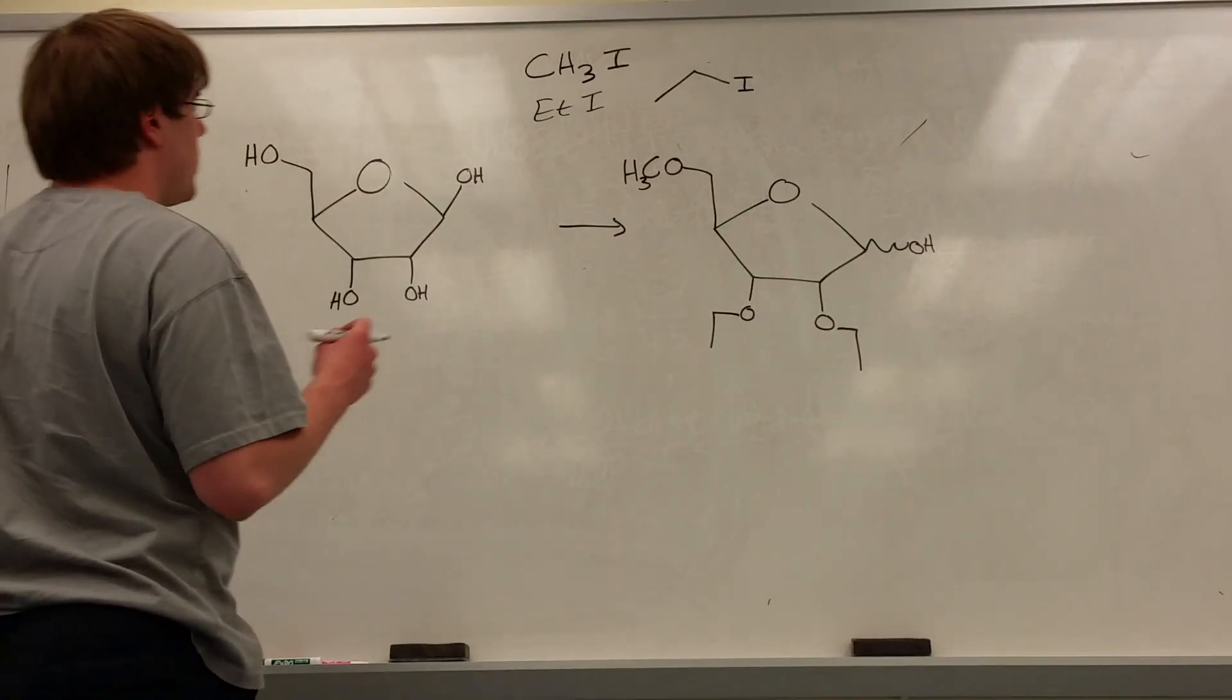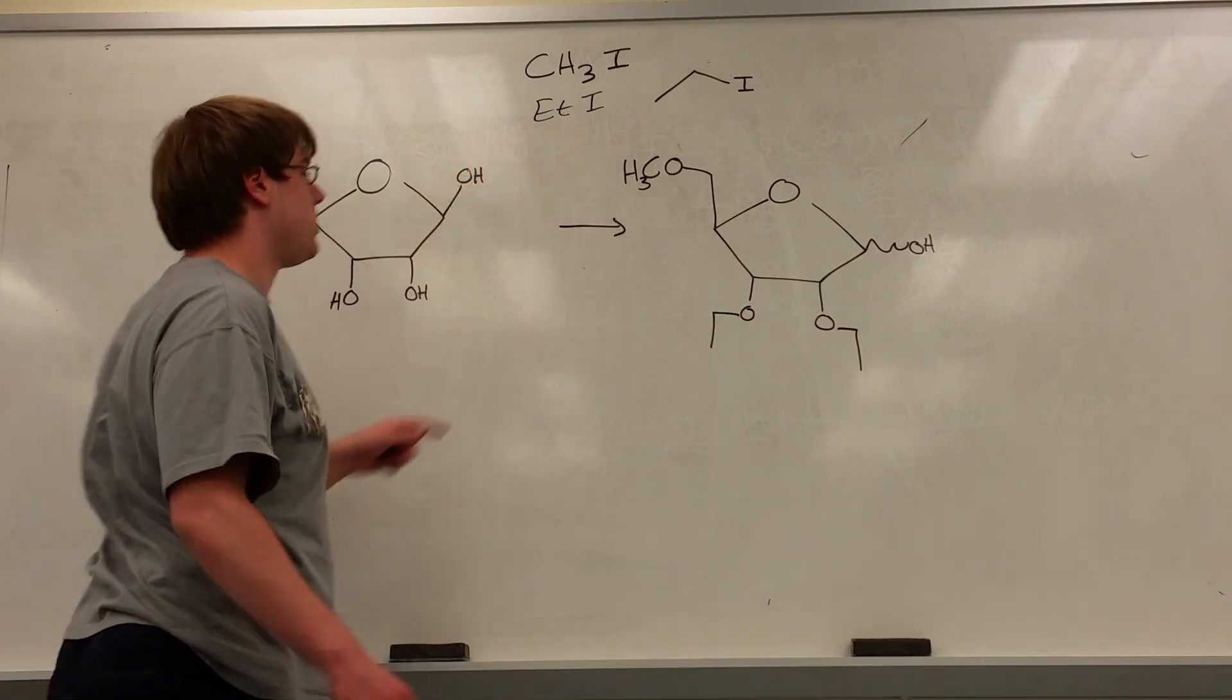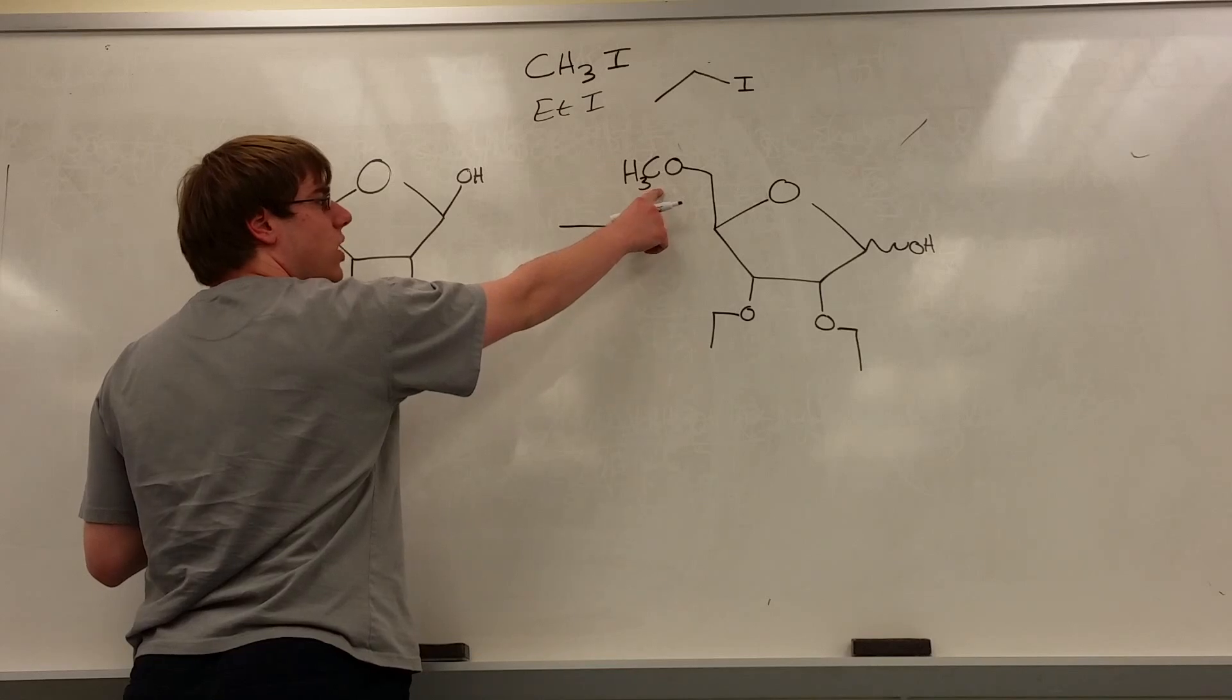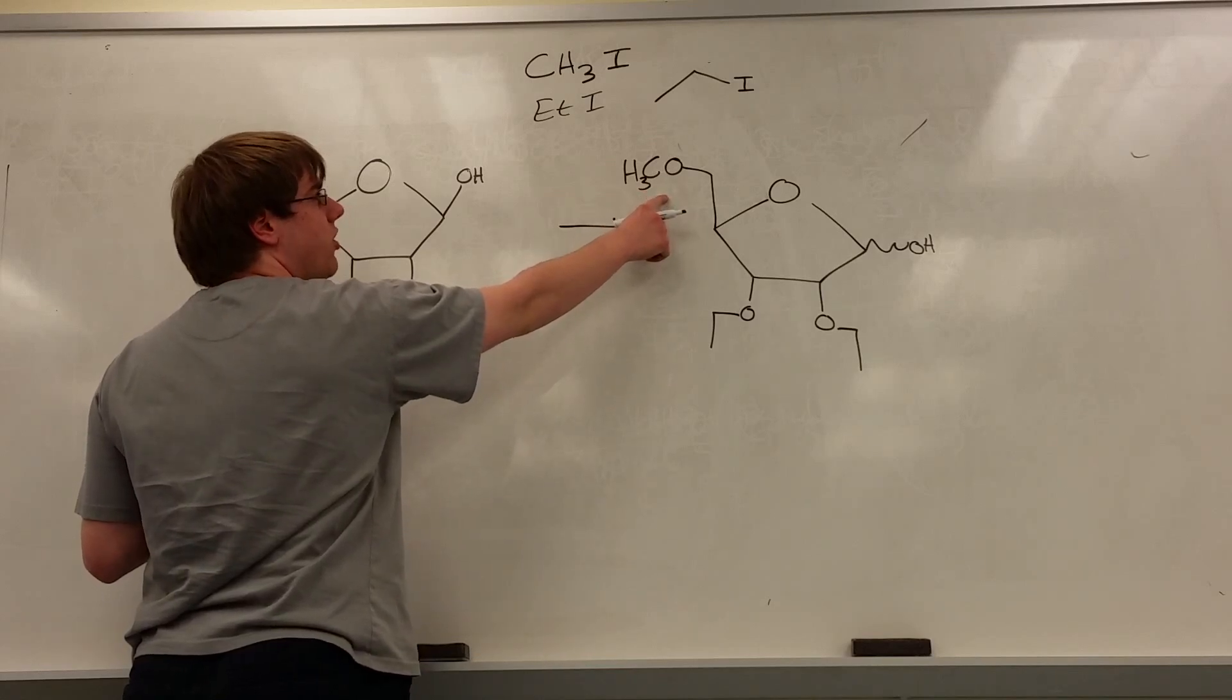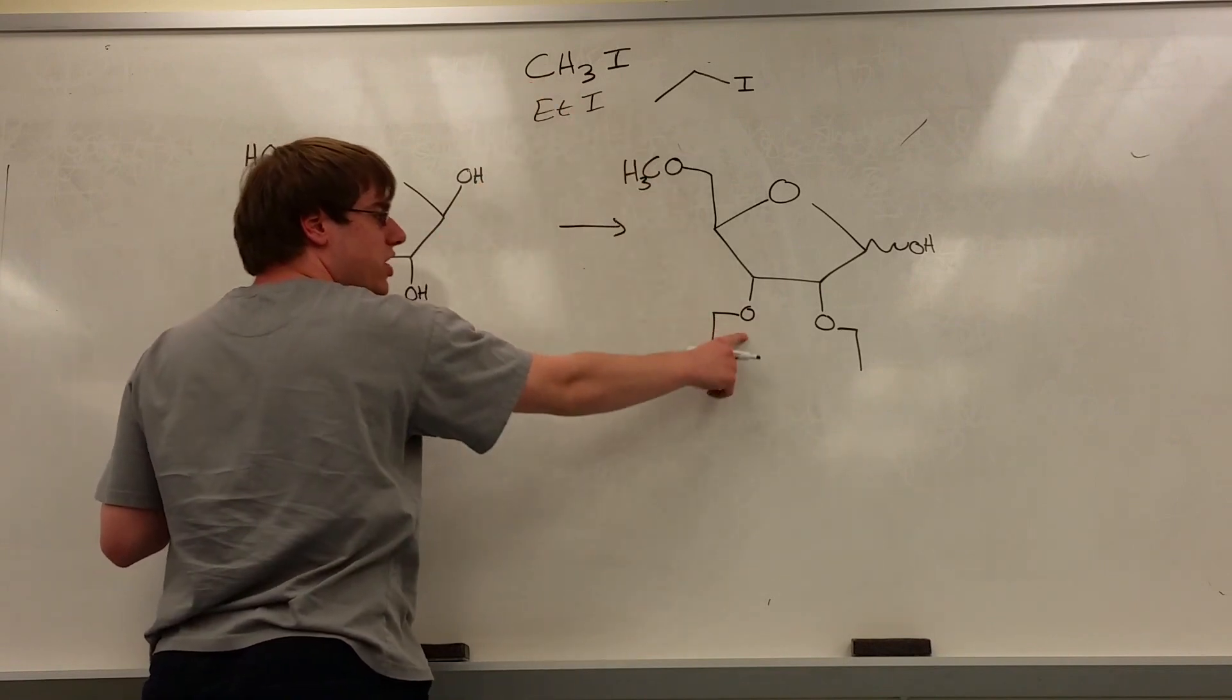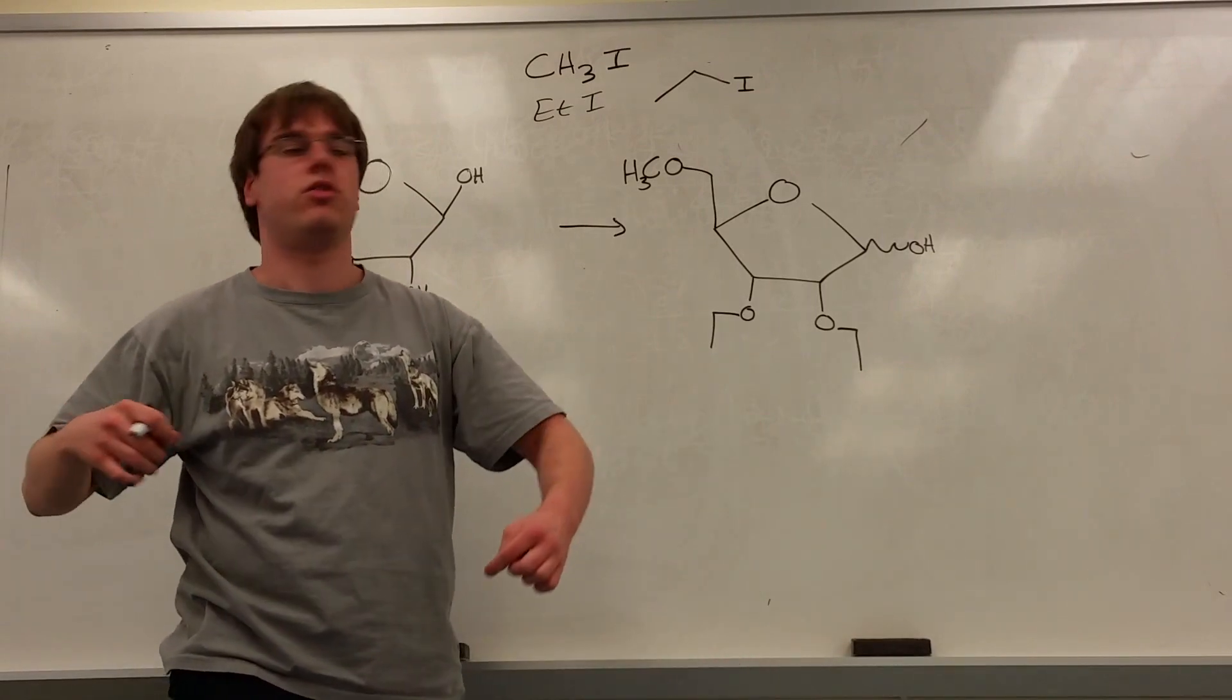So let's start by thinking about which of these should I use first, because if I use ETI and add these two on, this would end up getting that carbon chain as well. But we want it to be just a methyl. And vice versa, if I use the CH3I first, I'd get this, but then these would be OCH3s as well, and we have no way of removing those methyls.